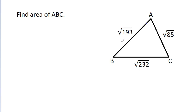In this video, we have been given that AB is √193, BC is √232, and AC is √85. Then we have to find the area of triangle ABC.